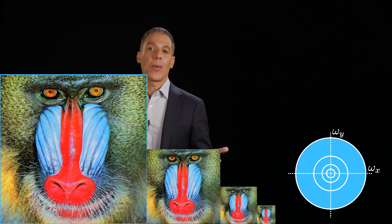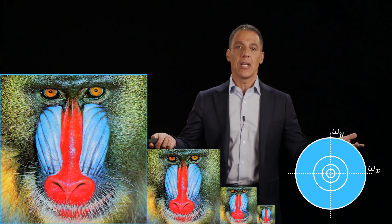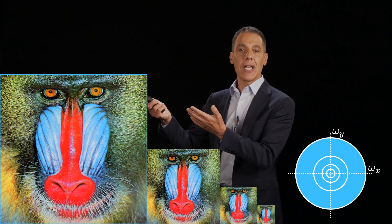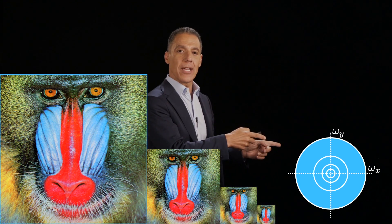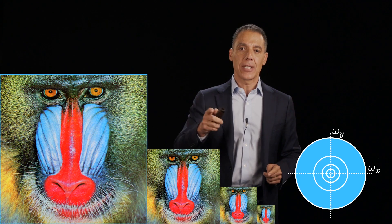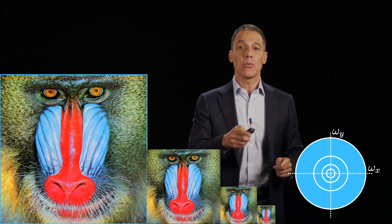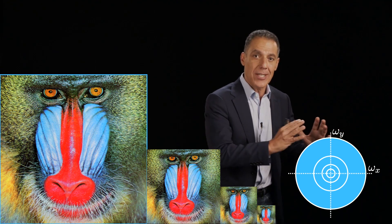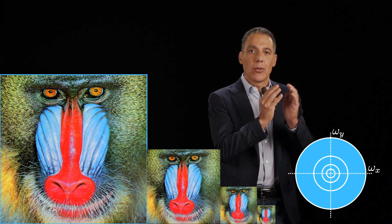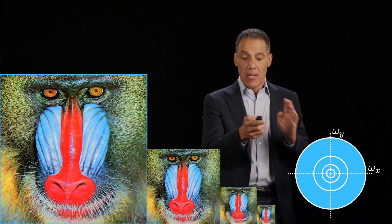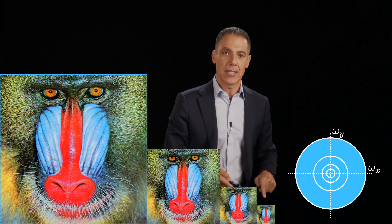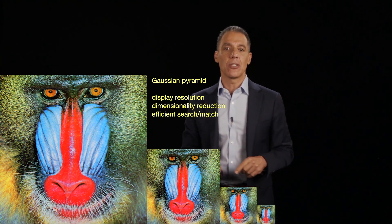If you go all the way up the pyramid, you've got all your energy but also all the pixels to deal with. The reason we understand this picture is that as we blur and downsample, we are compressing the frequency representation to be narrower and narrower band. We do that to avoid aliasing as we work our way down the Gaussian pyramid.